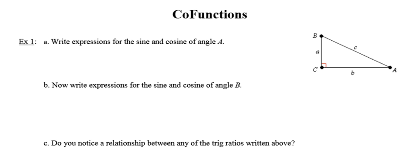Alright, we're going to start by writing expressions for the sine and cosine of angle A. Just a reminder, SOHCAHTOA: sine is the relationship between the opposite and the hypotenuse, cosine is the relationship between the adjacent and the hypotenuse, and the tangent of an angle is equal to the ratio between its opposite side and its adjacent side.